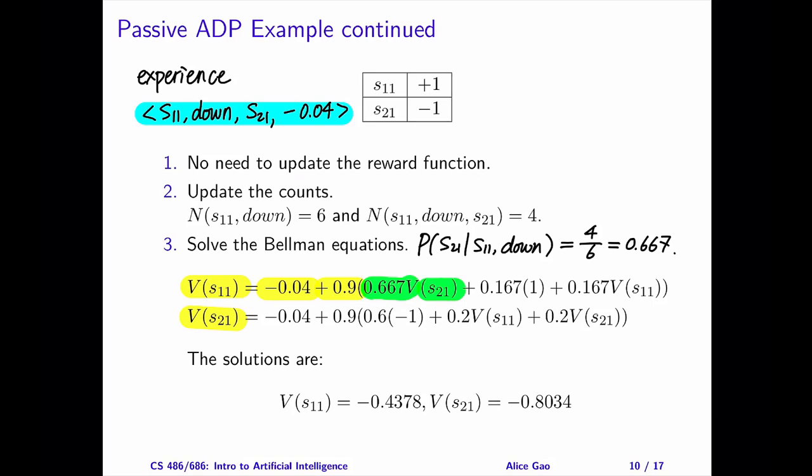With probability around 1 over 6, we are going to travel to the left of the intended direction and reach the goal state plus 1. So we get the utility plus 1.